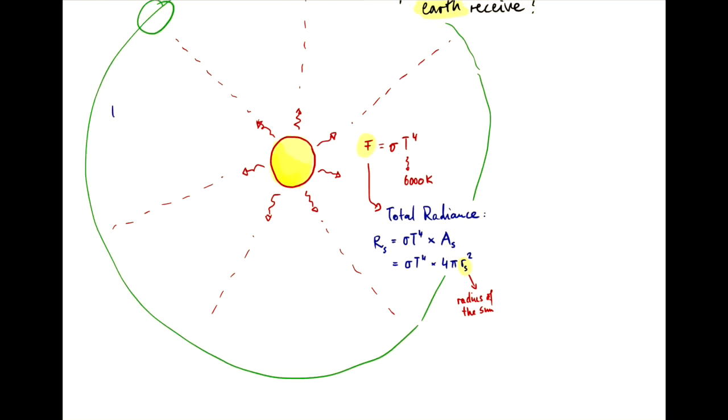So the power that Earth receives per unit area is the total power emitted by the Sun, which we've computed here, divided by the total area of a sphere of the radius